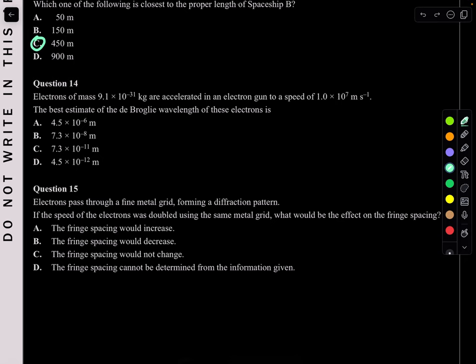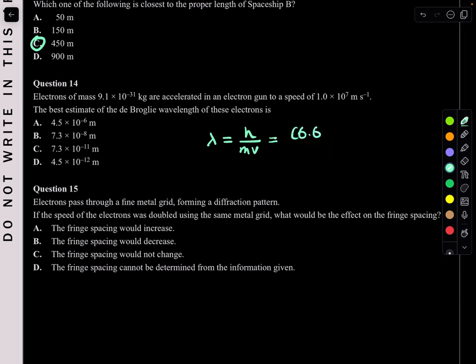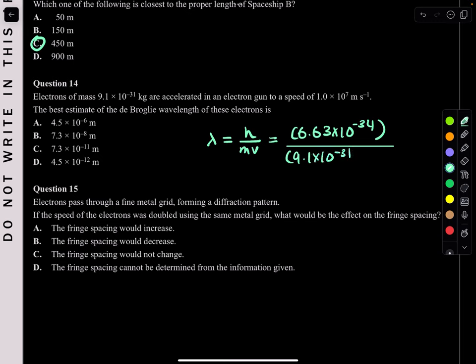Question 14. Electrons of mass 9.1 × 10⁻³¹ kg are accelerated to a speed of 1.0 × 10⁷ m/s. The De Broglie wavelength is λ = h/p = h/(mv) = (6.63 × 10⁻³⁴) / (9.1 × 10⁻³¹ × 1.0 × 10⁷) ≈ 7.28 × 10⁻¹¹ m. The answer is C.